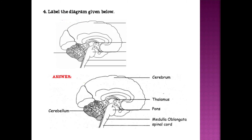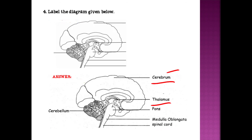Label the given diagram. This is cerebrum, this is thalamus, this is pons, this is medulla oblongata, this is spinal cord, and this is cerebellum. These are the different important parts of the brain.